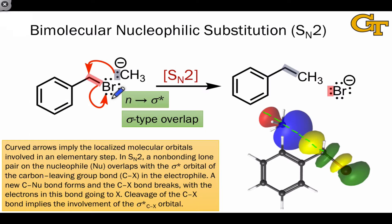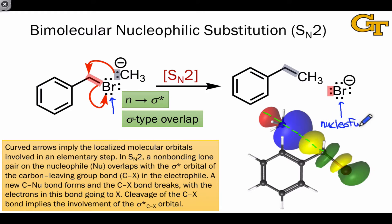The group that departs with a pair of electrons — the bromine, which is converted to bromide — serves as a nucleophage, and so its formal charge decreases by one, while the formal charge of the nucleophile increases by one because it has formally lost an electron pair.